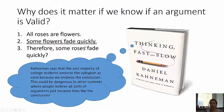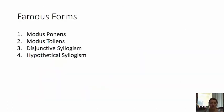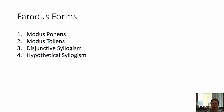That's why knowing whether arguments are valid or invalid is important in critical thinking. So let's talk about the famous forms. Here are the four famous forms we're going to learn: modus ponens, modus tollens, disjunctive syllogism, and hypothetical syllogism.